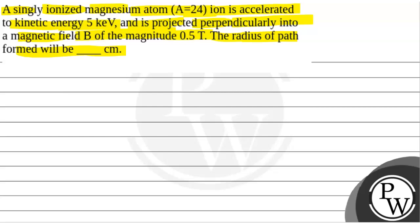So we will solve this question. First of all, we will see what will be the key concept to solve this question. The key concept that will be used to solve this question will be radius of path formed, that is given by mv upon qB sin theta.